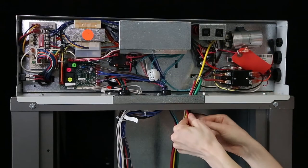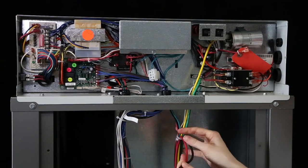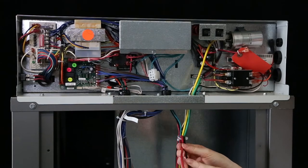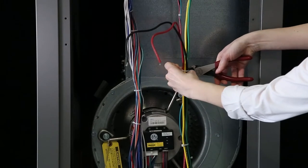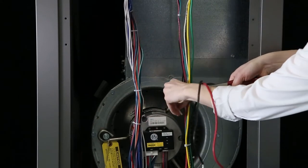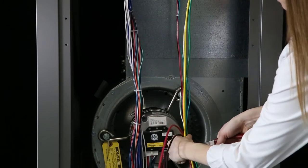Take the red and black wires out of the strain relief and pull them into the air handling compartment of the unit. Cut the zip ties off the bundle of wires that runs from the top control wiring plate down to the compressor section.